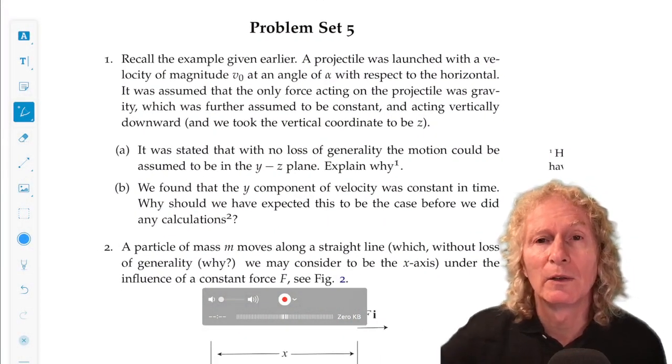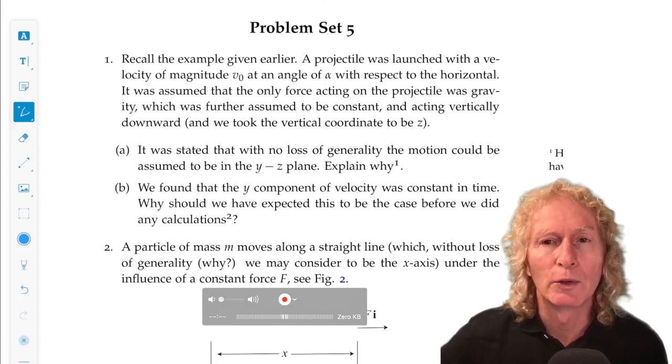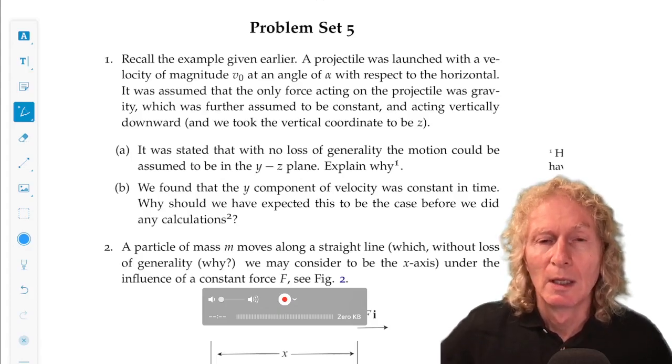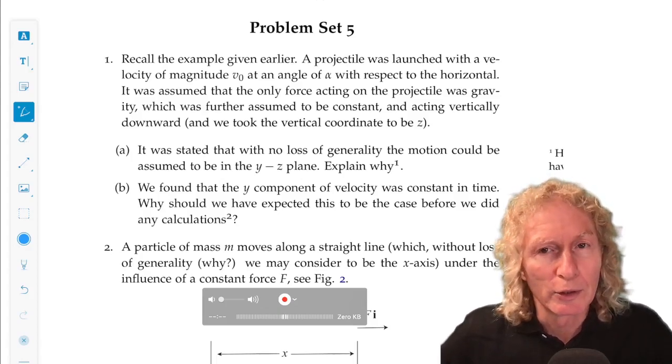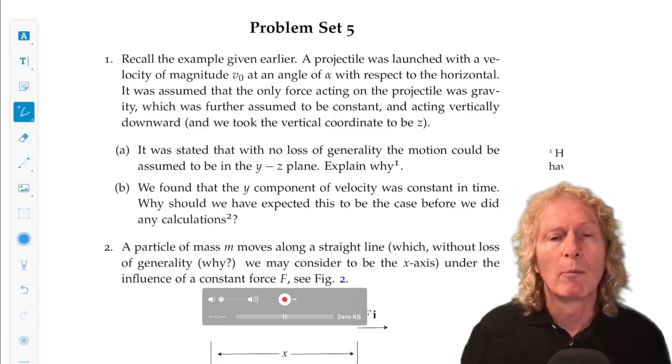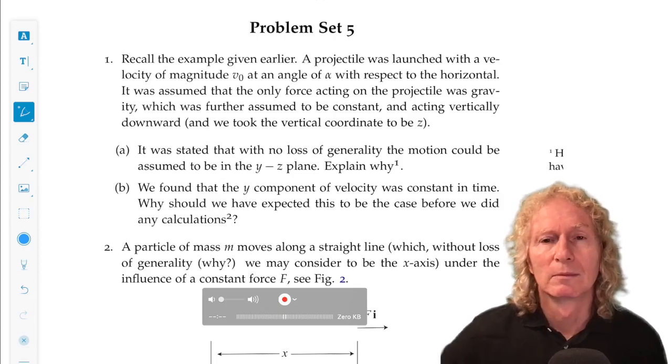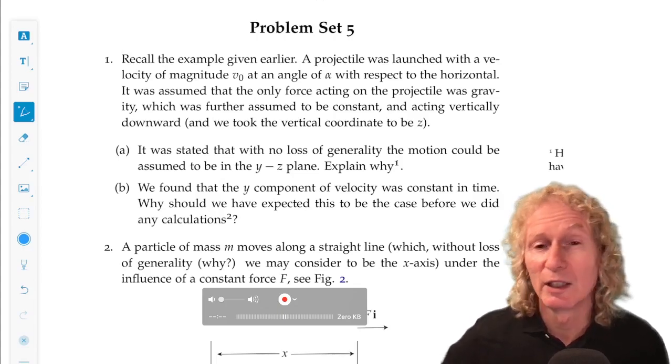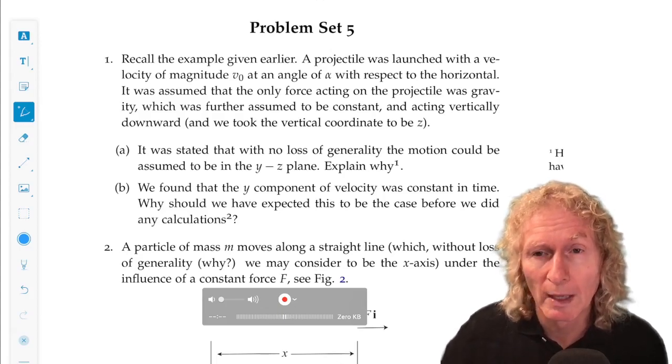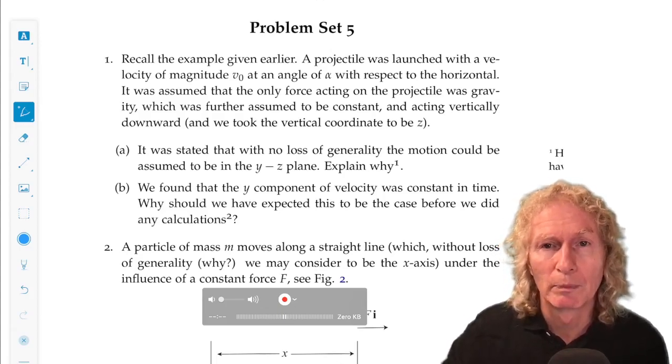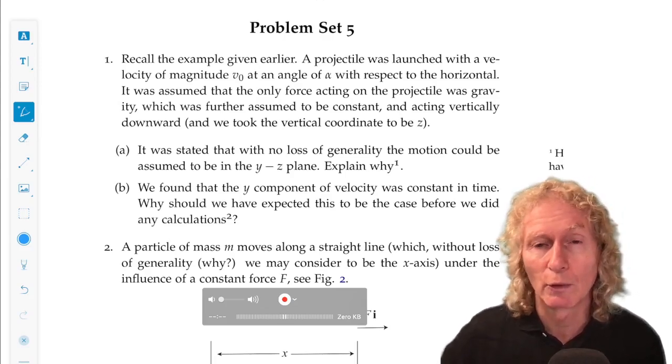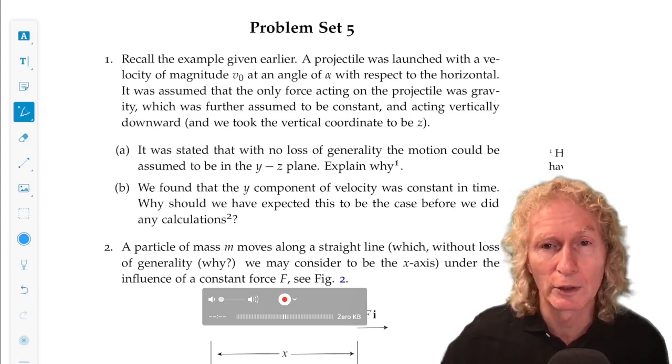Problem one is about Newton's first law, that momentum does not change in a particular direction unless there's a force acting in that direction. So in this problem, you throw a ball up in the air. You give it an initial velocity. Think of the coordinate system i, j, k. The only force acting on the particle is gravity in the minus k direction. There's no force in the i direction, there's no force in the j direction.